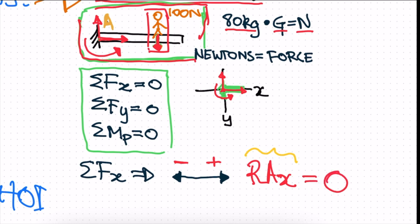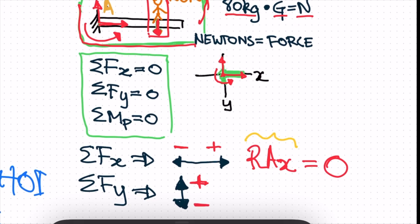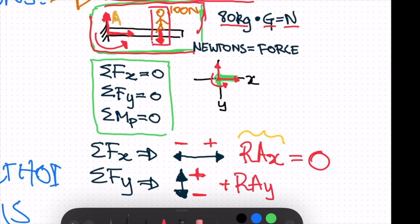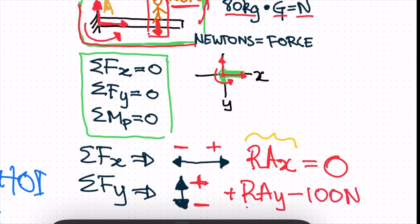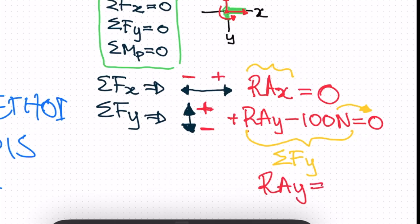Now let's look at the sum of forces in the y direction — any forces acting up or down. Forces acting up away from the ground are positive, and forces acting down toward the ground are negative. Our reaction arrow is pointing up, so we say positive RAY, and then the weight of the person acts down — 100 newtons. So: RAY minus 100 newtons equals zero.